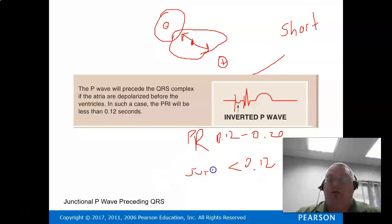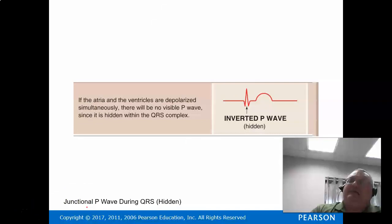It's not going to be as long as it was. We had 0.12 to 0.20 when we were talking about a sinus rhythm. That was your PR interval. This PR interval is not going to be that. This PR interval is going to be less than 0.12 for a junctional rhythm. In other words, it's going to be three boxes or less. Let's take that a little step further. Sometimes the P wave just will get buried in the QRS, so we won't see a P wave at all.